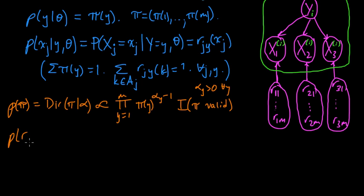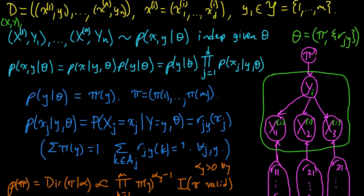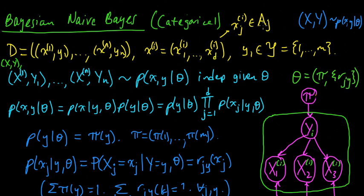We also need a prior for each R_{j,k} — using k for the value that y takes. We'll make that also a Dirichlet. To keep things simple, let's give all of these the same parameter β. For that, let's suppose that all features take values in the same finite set A, say from 1 to capital N.